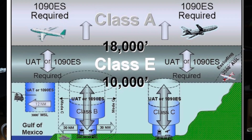In many countries, including the U.S., ADS-B Out is mandatory in specific airspaces, such as Class A, Class B, and Class C airspaces, as well as above 10,000 feet MSL. ADS-B Out significantly improves ATC's ability to monitor and manage air traffic, particularly in remote areas where radar coverage is limited.